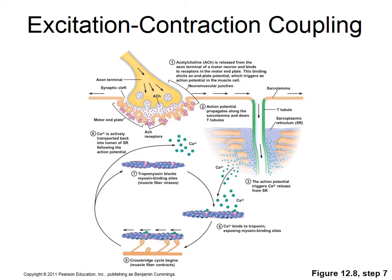When action potentials stop, calcium channels close. Calcium pumps on the sarcoplasmic reticulum pump calcium back in. Calcium levels fall in the sarcoplasm, calcium unbinds from troponin, tropomyosin moves back over the binding sites for myosin on actin, and the muscle relaxes. One action potential releases only some calcium, involving only some thick and thin filaments in contraction. Continued action potentials release even more calcium, involving more actin-myosin interactions and producing stronger contraction.